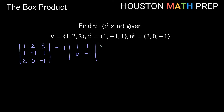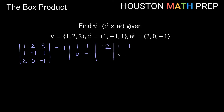We used to do minus j-hat here, so this time we do minus 2. Crossing out the row and column that 2 is in, we have leftover entries 1, 1, 2, -1 — so our two by two determinant is 1, 1, 2, -1. We used to do plus k-hat, but now we do plus 3, remembering that we alternate signs: plus, minus, then plus.